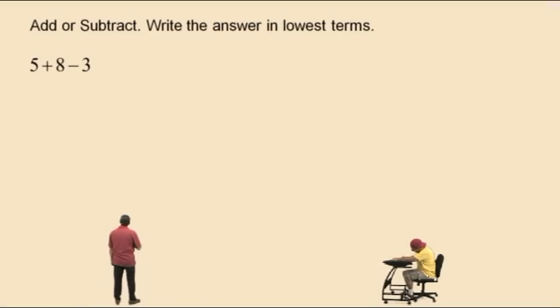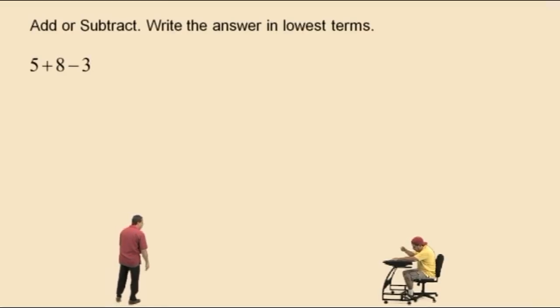Let's begin with a review problem: 5 plus 8 subtract 3. Remember, order of operations says we have to work left to right. So 5 plus 8 is 13, subtract 3 is what, Charlie? Ten.